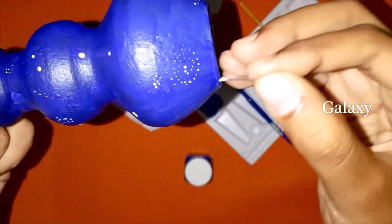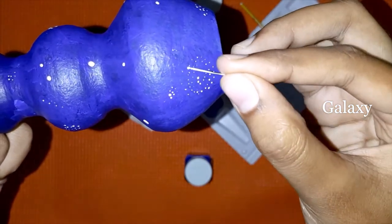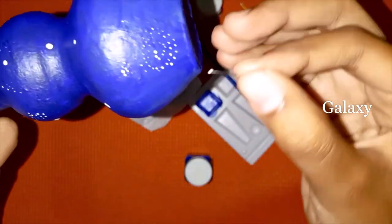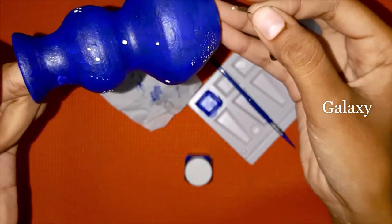Dry the pot paint for about 12 to 24 hours.